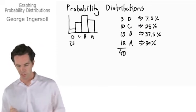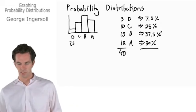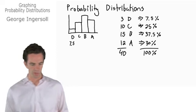Now, sanity check, let's make sure this adds up to 100 percent. 7.5 plus 37.5 is 45 percent plus 25 percent is 70 percent plus 30 percent is 100 percent. So that works.